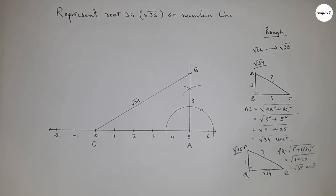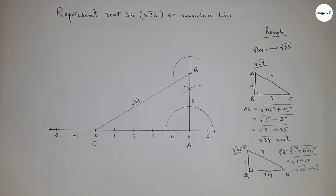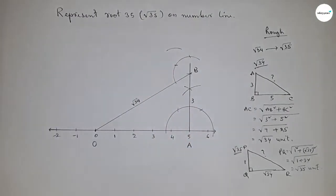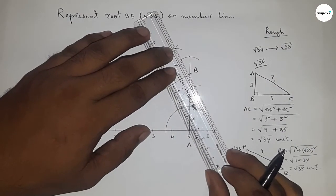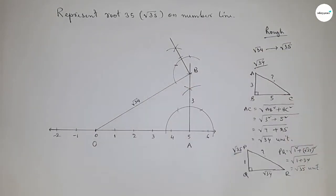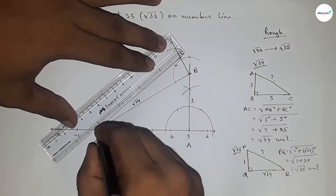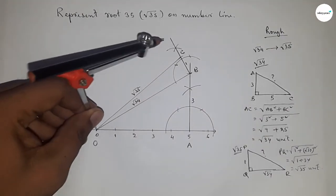Now applying this concept. First drawing a perpendicular line or 90-degree angle at the end of root 34. Using the same compass length, drawing arcs to construct the perpendicular line. Joining the points to form the perpendicular. Now taking the length of one unit between any two numbers on the number line, placing the compass here and cutting at point C. So this is one unit length.